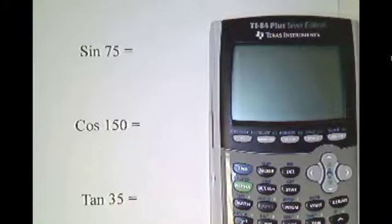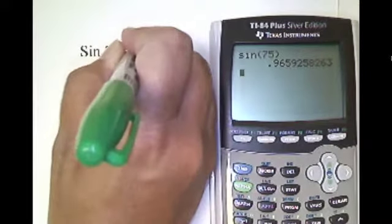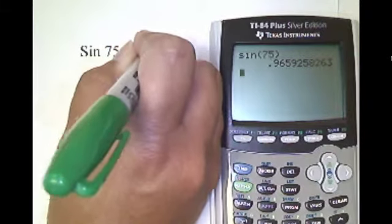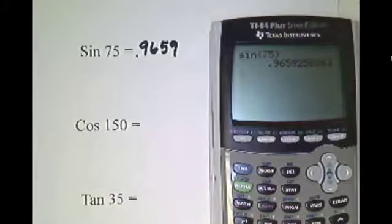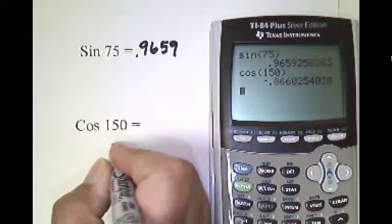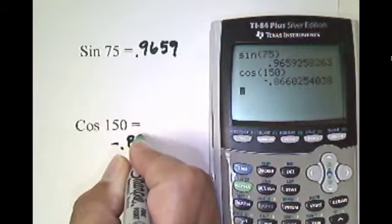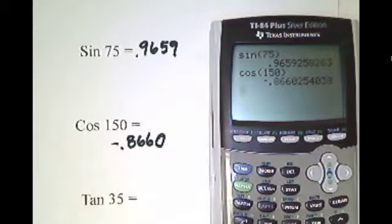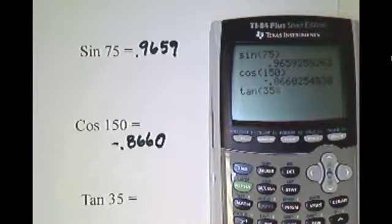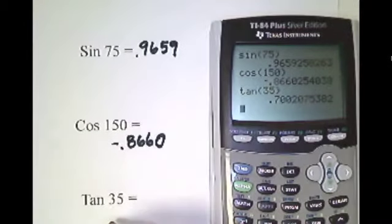Now let me show you how to use the calculator. We first want to find the sine of 75, so I just hit sine 75, and it is 0.9659. Usually we round to the ten thousandths place. Cosine 150 is negative 0.8660. Tangent of 35 is 0.7002.